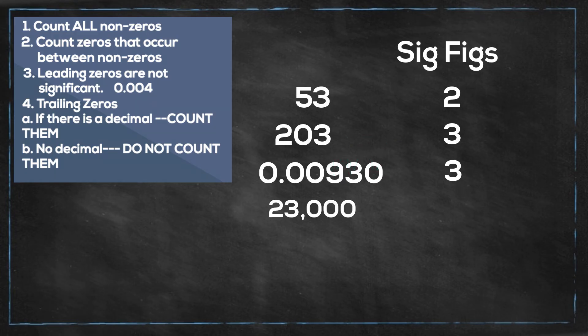Next we have 23,000. Let's look at the rules for trailing zeros. There is no decimal. So you do not count the trailing zeros. So you will have two.